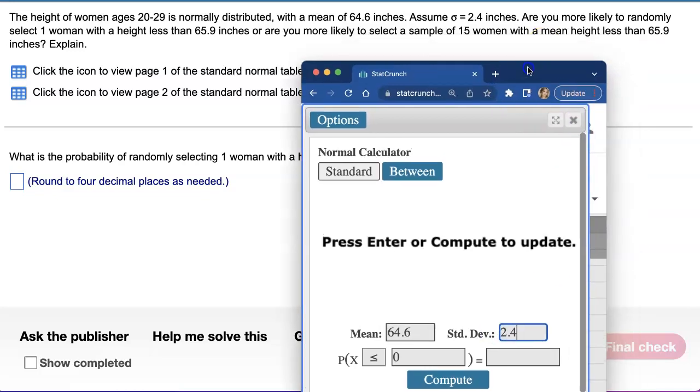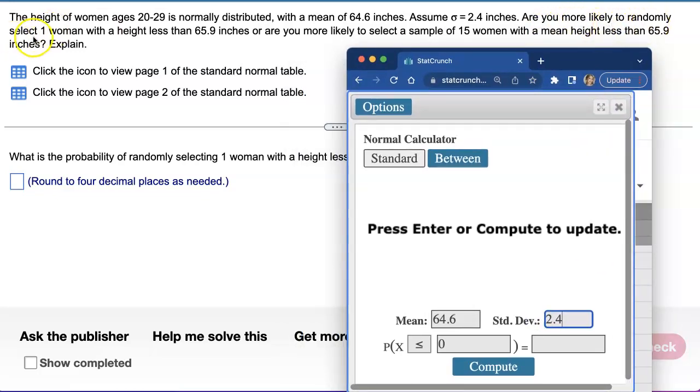And they're asking a question: are you more likely to randomly select one woman with a height less than 65.9 inches or are you more likely to select a sample of 15 women with the mean height less than 65.9 inches?